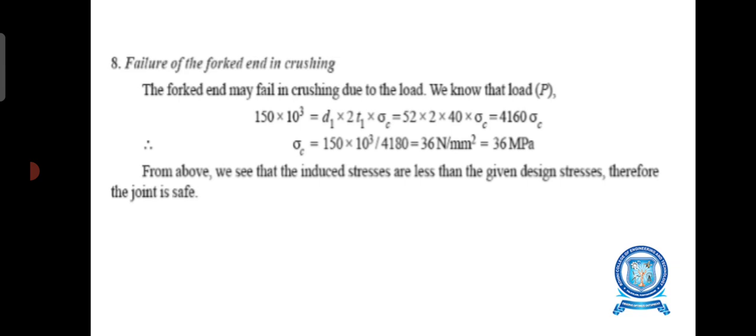Failure of the fork end in crushing. The fork end may fail in crushing due to the load. The formula is P equal to d1 × 2t1 × sigma C. Substituting P equal to 150 × 10³, d1 equal to 52, and t1 equal to 40, we find sigma C equal to 36 N per mm², that means 36 MPa. We can see that the induced stresses are less than the given design stresses, therefore this design is safe.